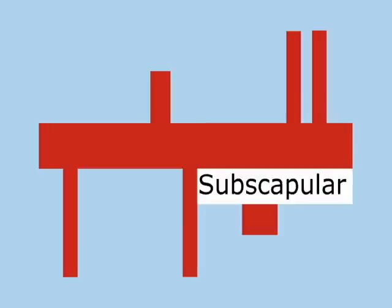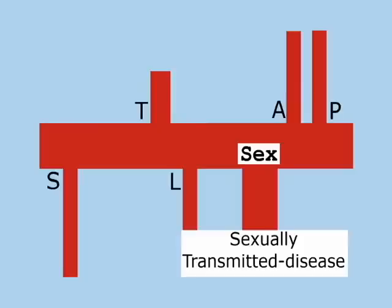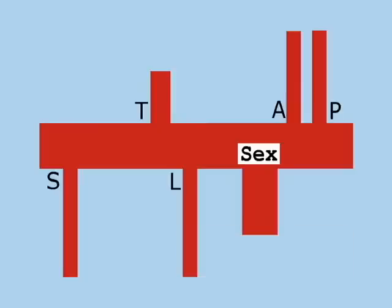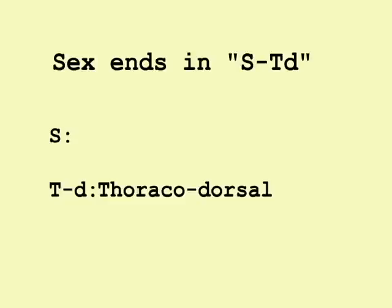Remember that 'sex' — the subscapular trunk — goes down and is a big deal, because it's a big trunk with sub-branches. At the end of sex there is an STD — a sexually transmitted disease. Sex ends in STD: S — scapular circumflex branch; T — thoracodorsal branch.